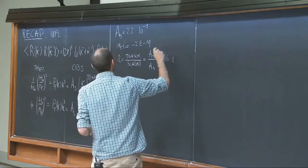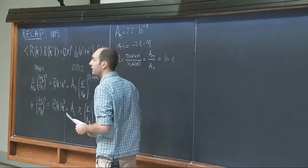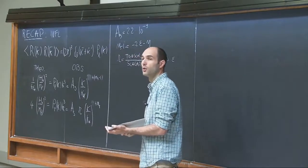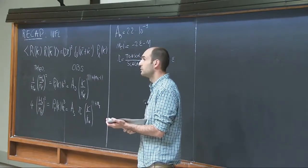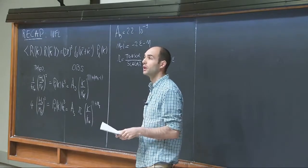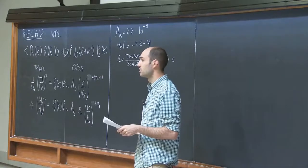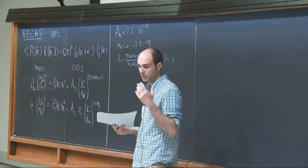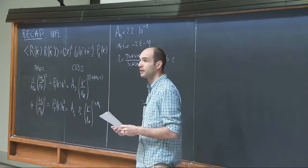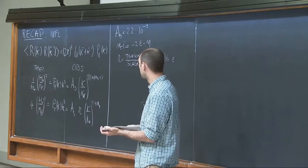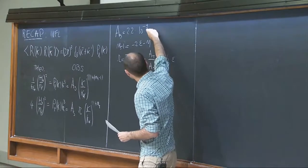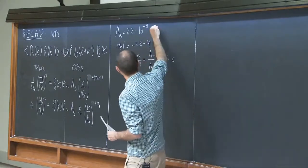The amplitude of the scalar is measured — it's about 10 to the minus 9, a small number. That means primordial perturbations are small, which means we can use perturbation theory for all these calculations. It also means we can use analytical tools to solve the CMB and large-scale structure. The part of large-scale structure we understand well is the part under perturbative control.